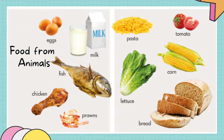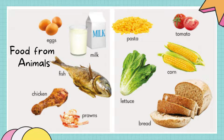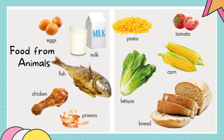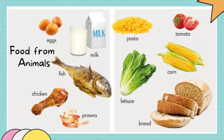Eggs come from the chicken. Milk comes from a cow, a goat, a sheep. So these foods come from animals.